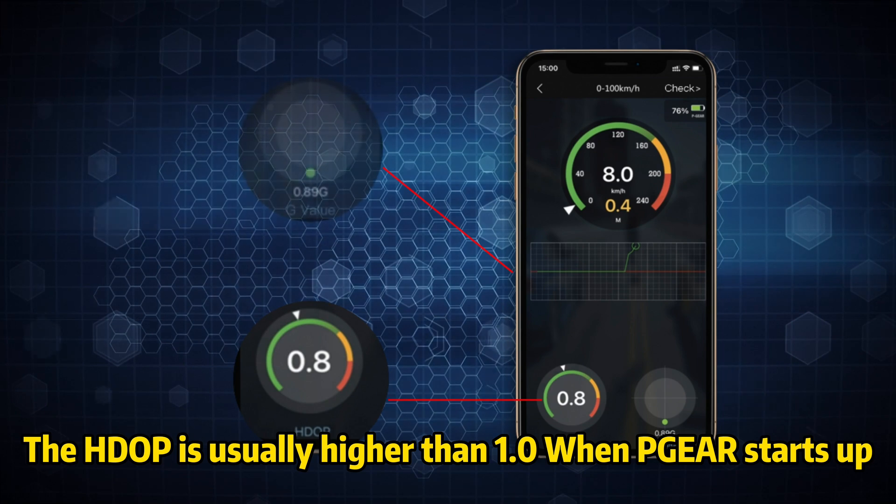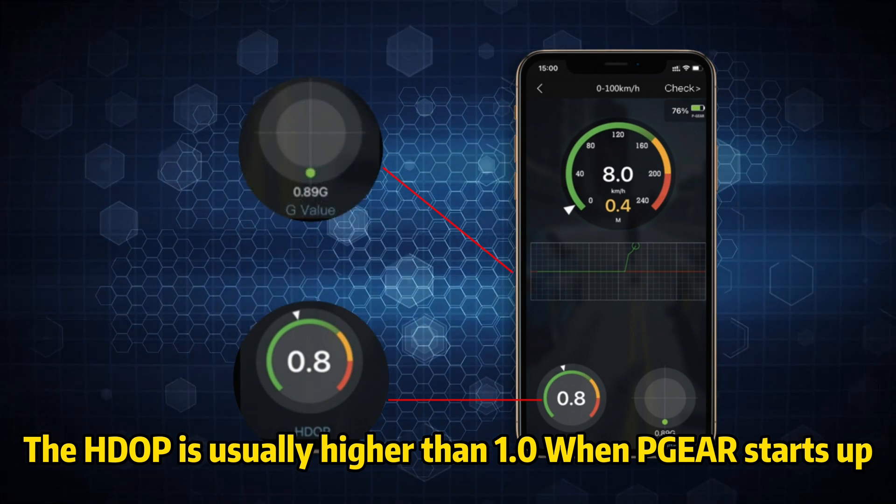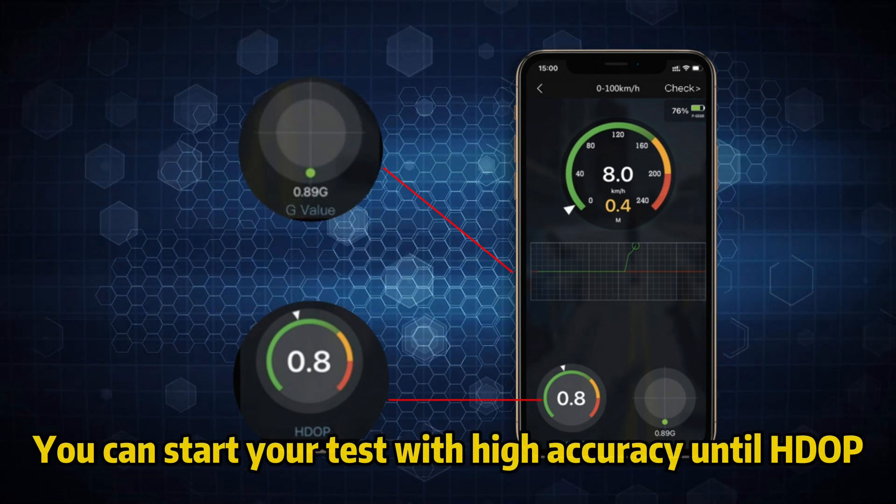The HDOP is usually higher than 1.0 when gear starts up. You can start your test with high accuracy until HDOP is stable at 0.8 or below 0.8 and does not fluctuate.